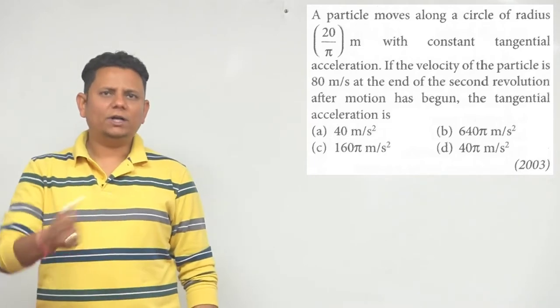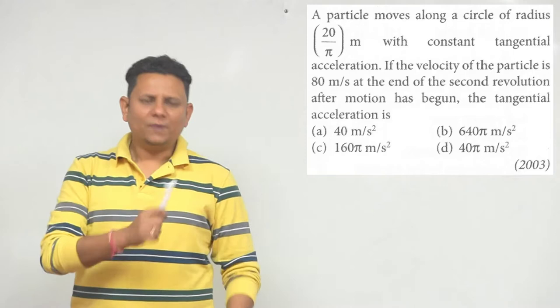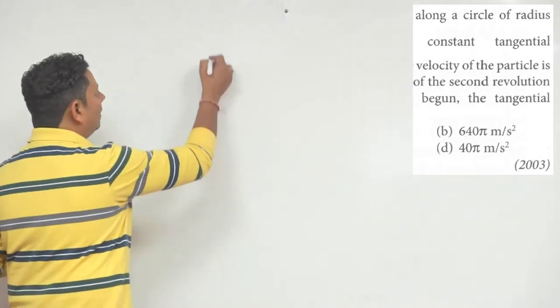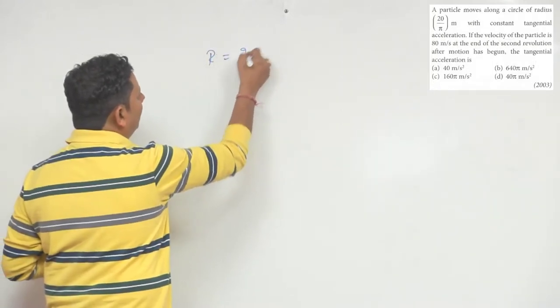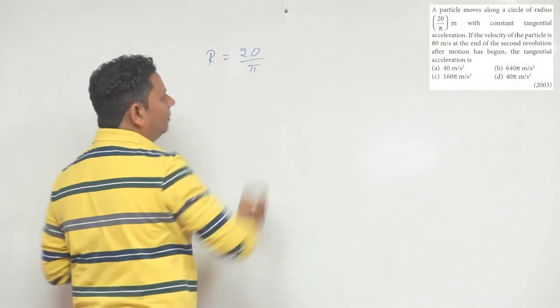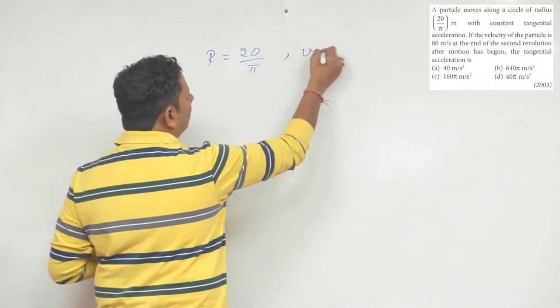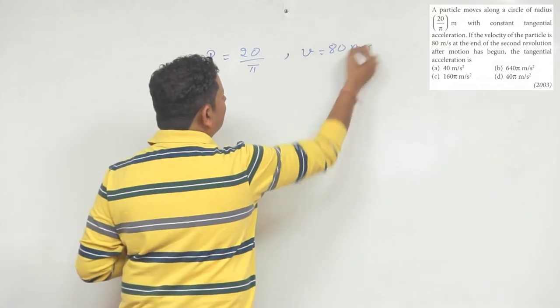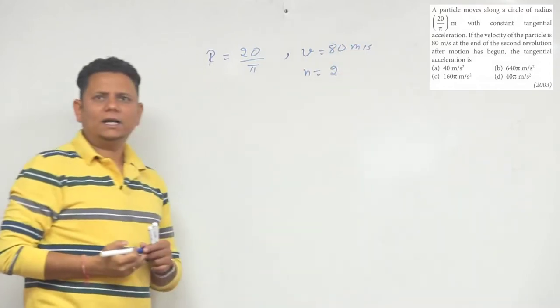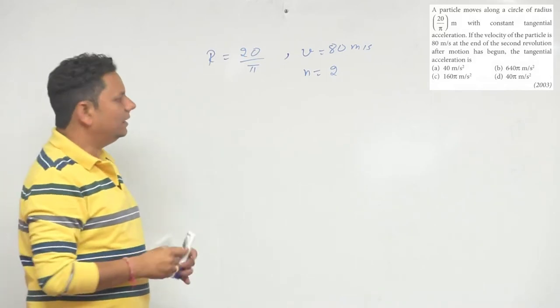We are given that radius r is 20/π meters. Along with that, we're given the velocity value is 80 m/s after 2 revolutions. If you have completed two revolutions around the circle...